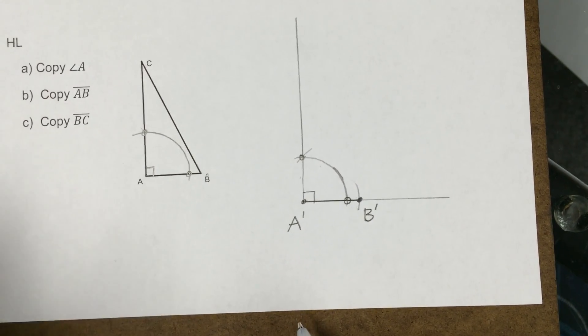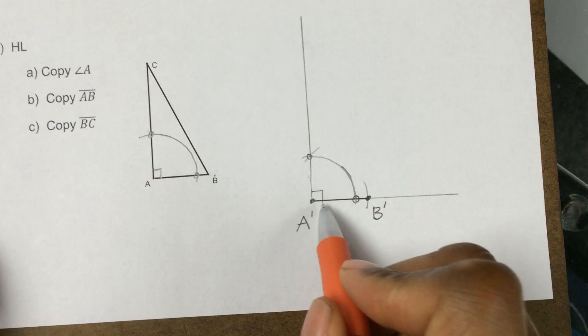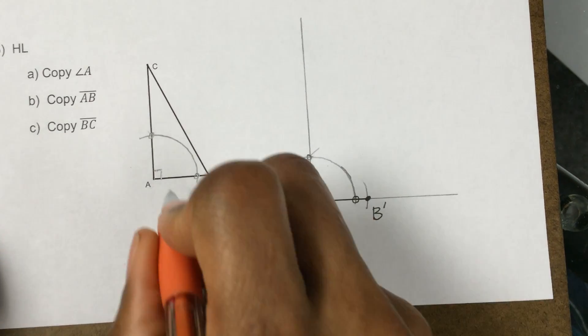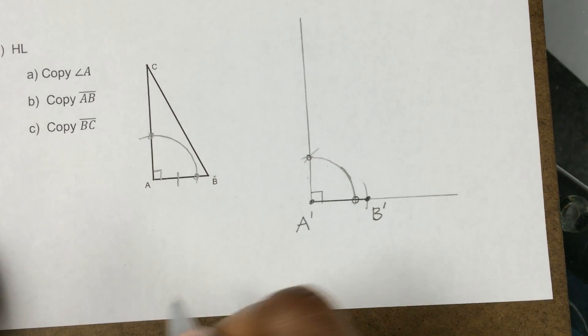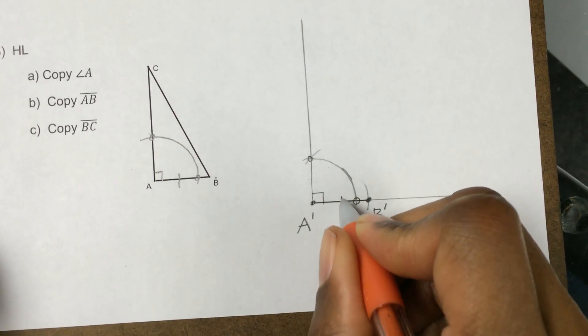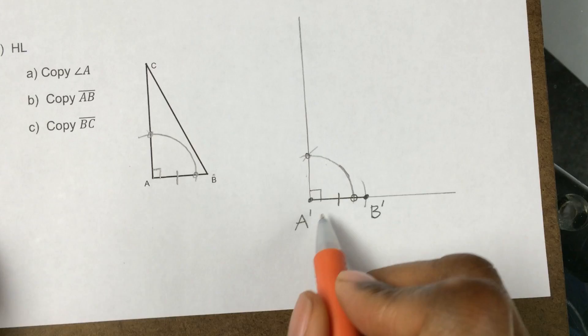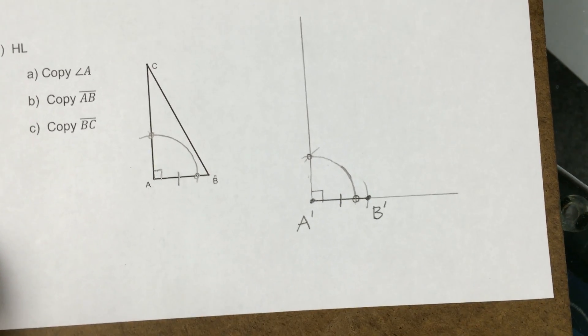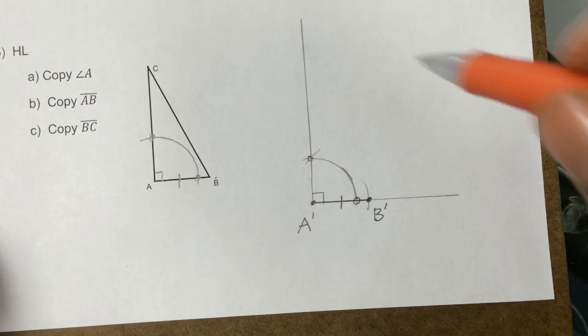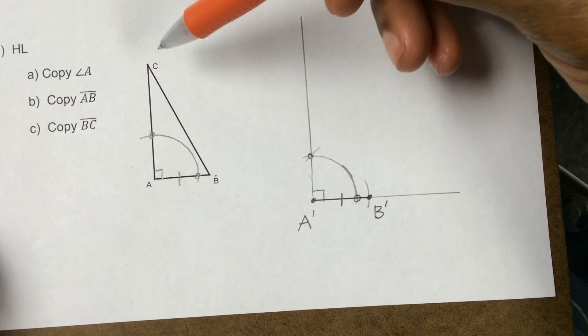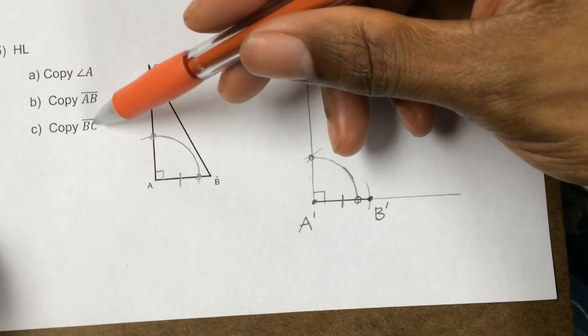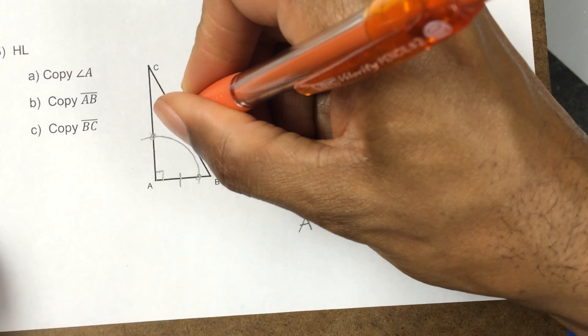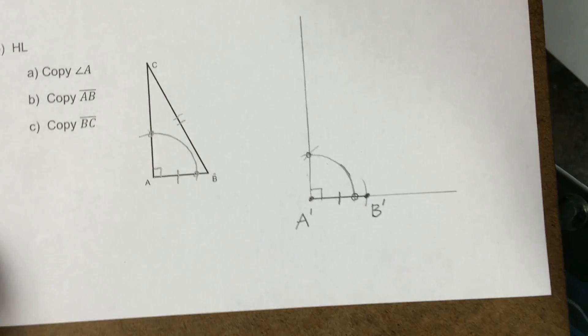OK, we're doing hypotenuse leg. And this is going to be a leg. So we've just duplicated side AB. So I'm going to put a little mark to show that AB is congruent to A prime B prime. So all that's left is the hypotenuse. We've done a leg. Now how about the hypotenuse, which is BC? So we're duplicating this guy right there.